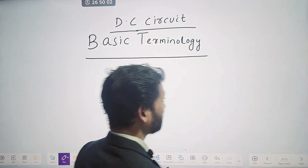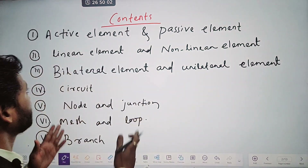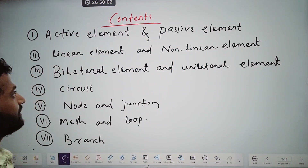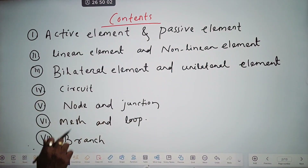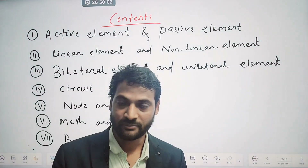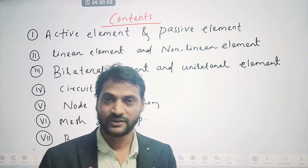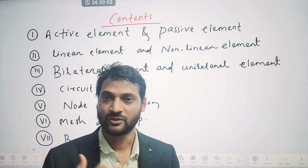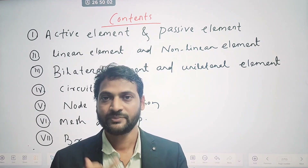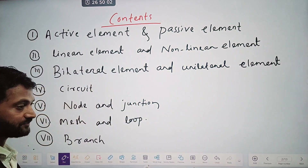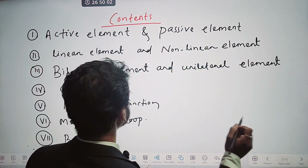These are the following points I will cover in this lecture: active element and passive element, linear element and non-linear element, bilateral element and unilateral element, the definition of circuit, the difference between junction and node, the difference between loop and mesh, and what is branch. First we will discuss about active and passive element.